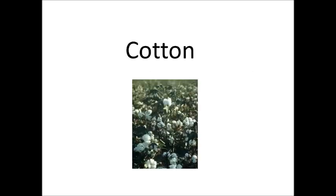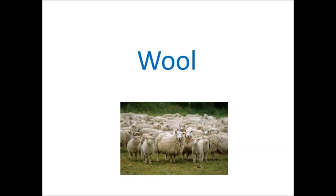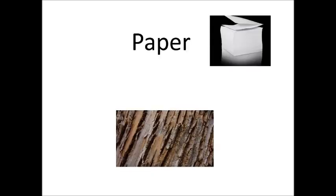Cotton, which most of your clothes are made of, is a natural material that comes from a plant. Wool is a natural material that we get from sheep, and paper is a natural material.